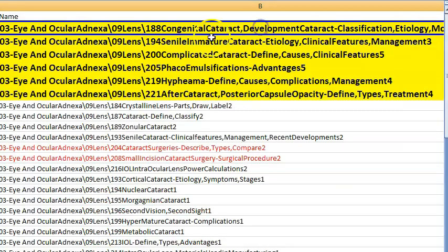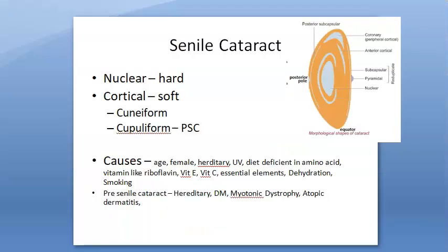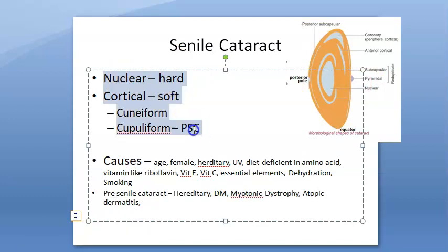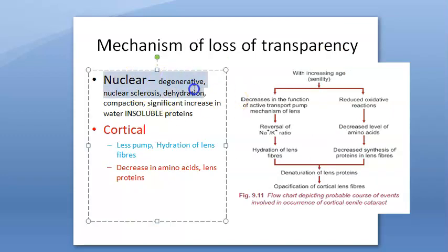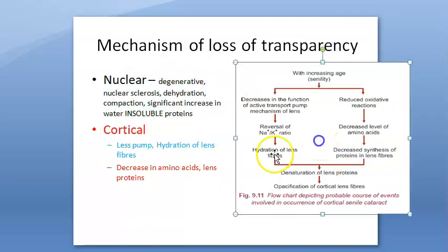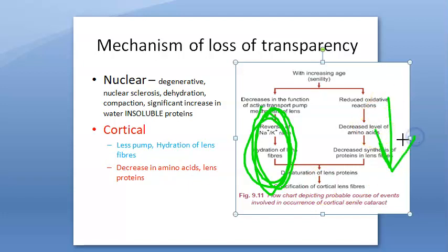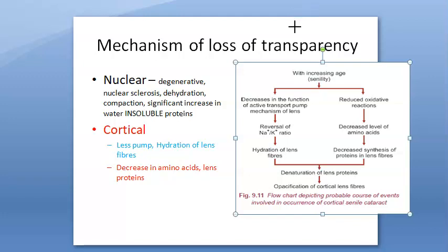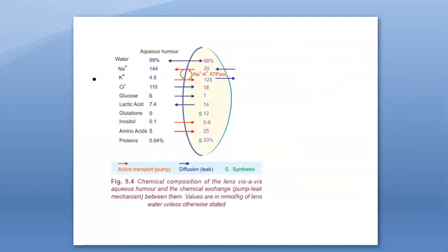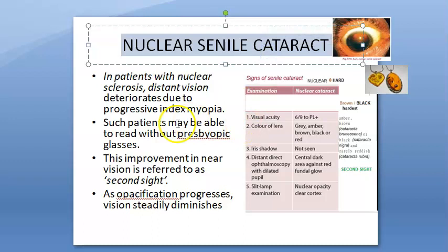Senile cataract is acquired and age-related. Types: nuclear (hard) and cortical (soft). Nuclear cataract: nuclear sclerosis and dehydration cause opacification. These patients experience 'second sight' — the increasing index of the nuclear lens improves near vision, reversing presbyopia. They also see better at night. Types: cataracta rubra (red), cataracta brunescens (brown), cataracta nigra (black). Grading 1–5 based on color; grade 5 is ultra-hard blackish.